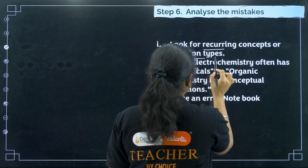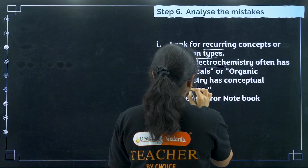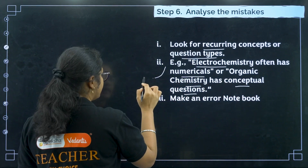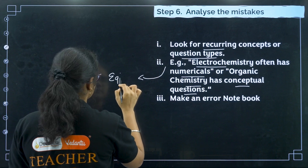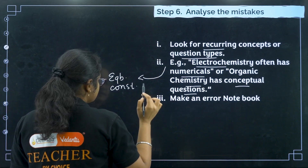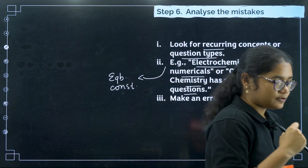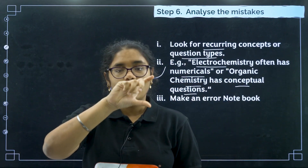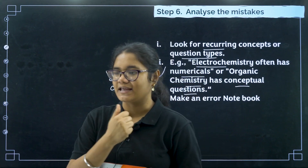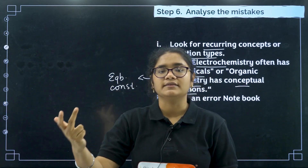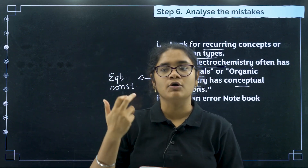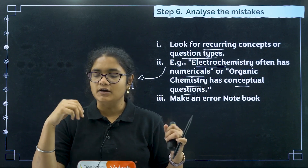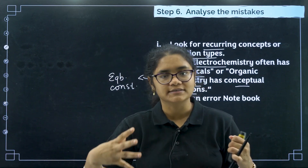In electrochemistry, more questions come from the equilibrium constant formula and topics like galvanic cell, Nernst equation, hydrogen electrode, Faraday's law, and commercial batteries. Our PYQ videos for chemistry are divided by topic within each chapter. When doing questions, identify which particular topic has more questions asked, so that during revision you focus on those important topics.